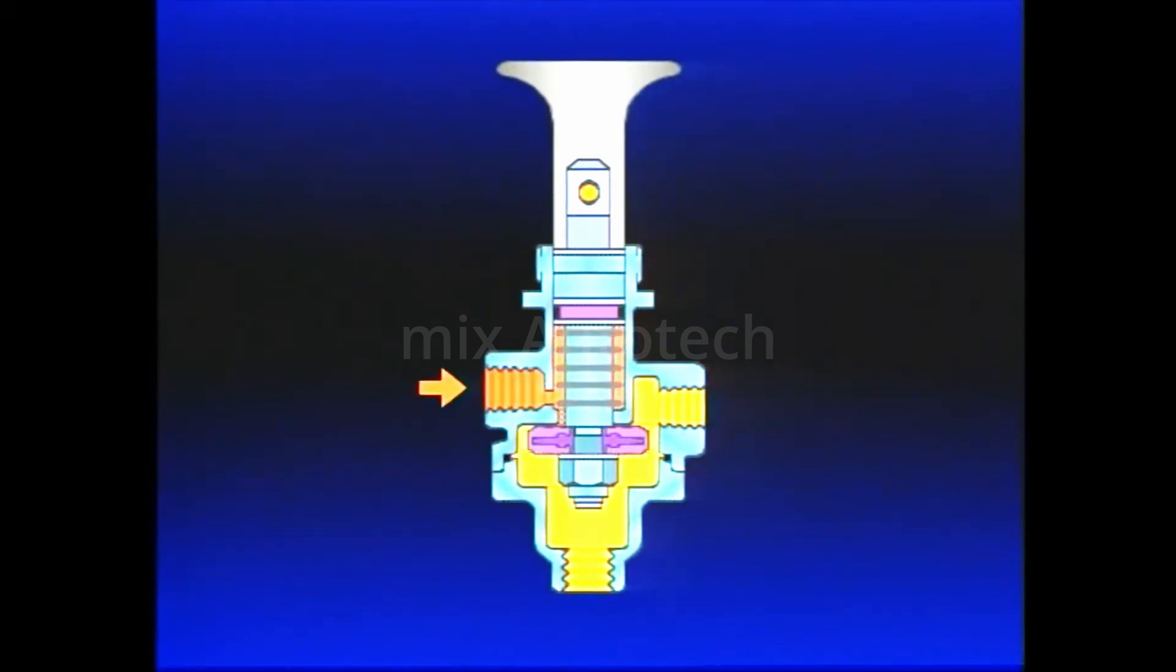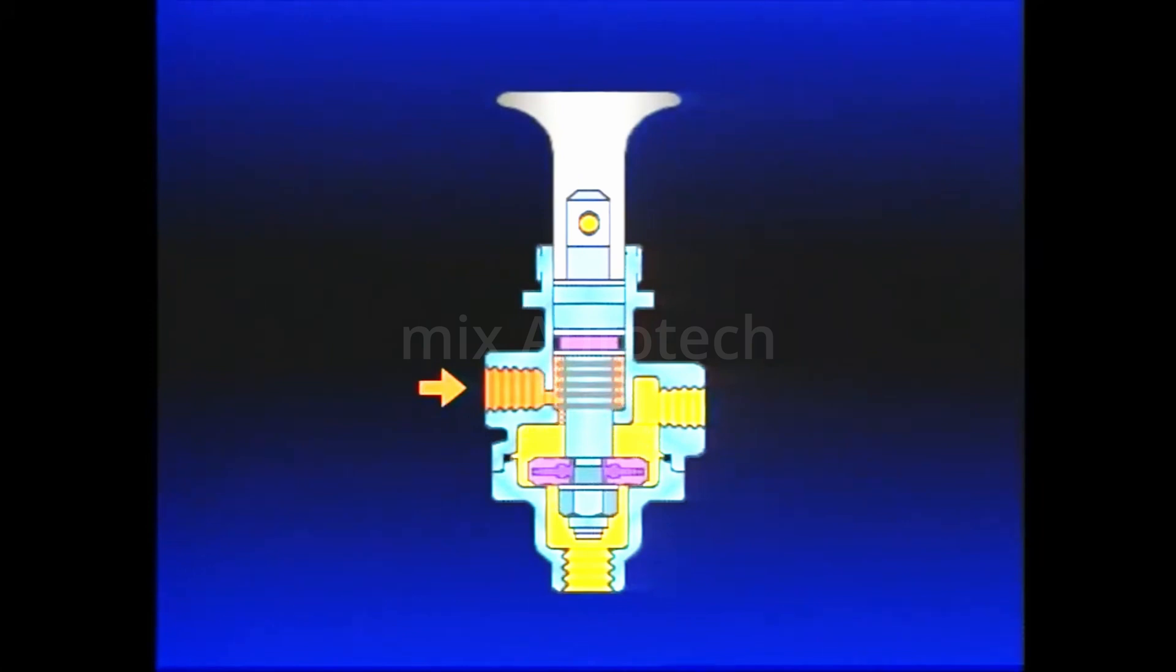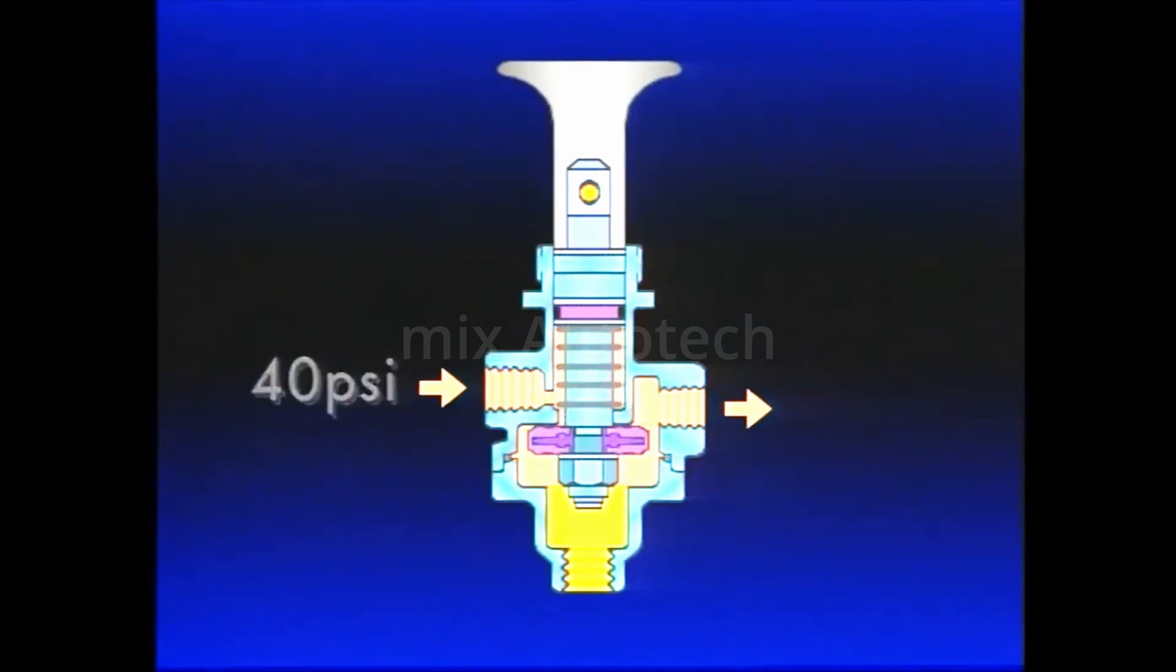Of course, pushing the plunger back in to the applied position reactivates the control. But supply air pressure must be above 40 PSI for it to stay in.